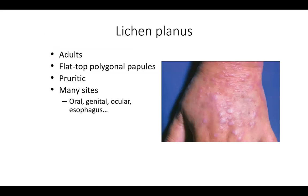Starting with lichen planus, it often presents as pruritic polygonal purple papules — a classic clinical presentation. These flat-top polygonal papules are pruritic and can occur in the oral region, genital, ocular, and even esophageal region.